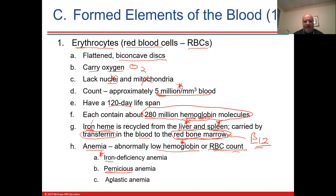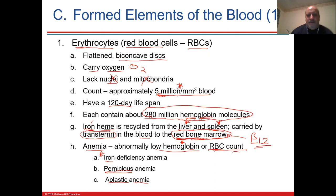Aplastic anemia has to do with the red bone marrow having a problem. Leukemia — myeloid leukemia — is a horrible condition. Acute myeloid leukemia is cancer of the bone marrow and the blood. The blood is made in the red bone marrow, and problems there can be a very serious condition.